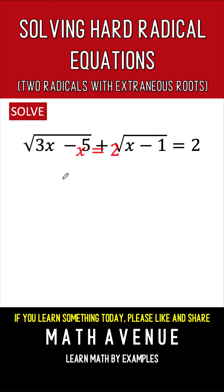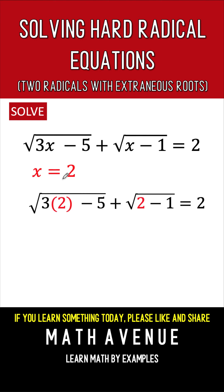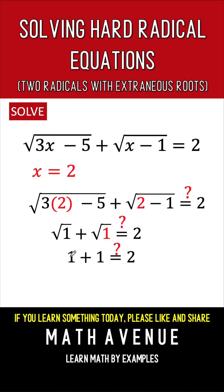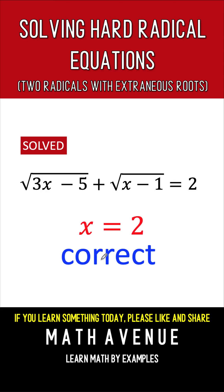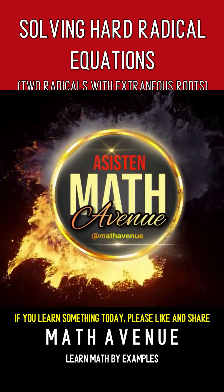So let's check x equals 2. Substituting 2 for x: 3 times 2 is 6, minus 5 is 1 — so we have the square root of 1. And 2 minus 1 is also 1 — so we have the square root of 1 again. The square root of 1 is 1, and 1 plus 1 equals 2. This is correct, so our answer is x equals 2. This problem is now solved. We'll see you in the next video. Bye for now.